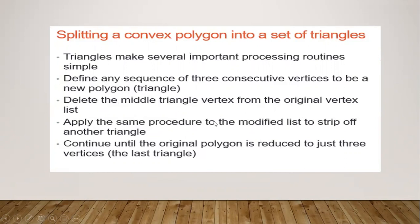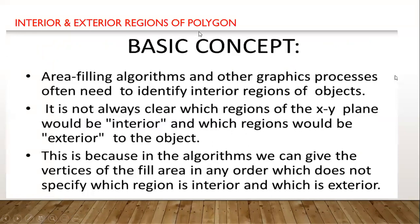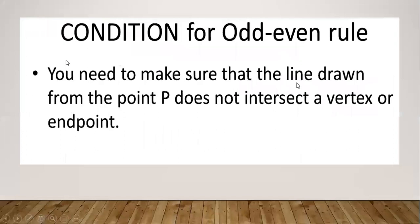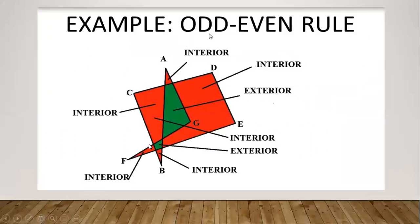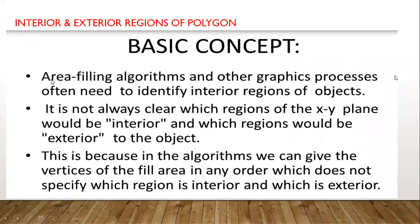The next topic is interior and exterior regions of a polygon. Any polygon has interior and exterior regions. For a given polygon, say a rectangle-shaped polygon intersecting another polygon below, it is very difficult to identify which is the interior region and which is the exterior region. The interior region is the inner part of the polygon, and the region outside the polygon is called the exterior region.